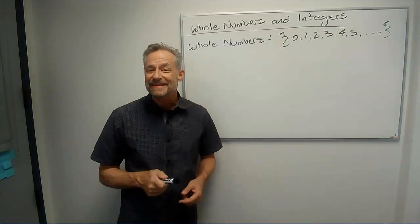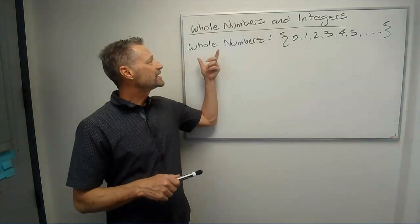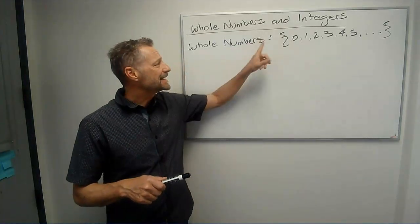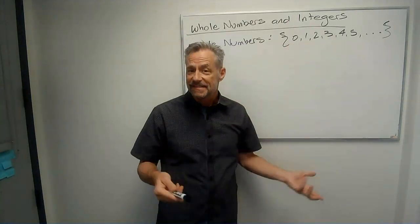Hi there, it's Professor Monty again, and let's talk about whole numbers and integers. So what I've done is I've written up the whole numbers up here. It's the set of numbers starting with 0 and then going 1, 2, 3, 4, 5, etc.